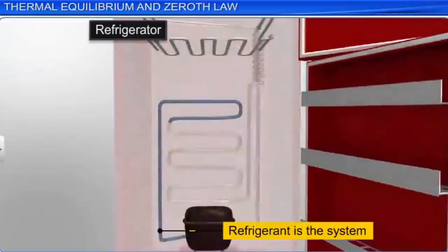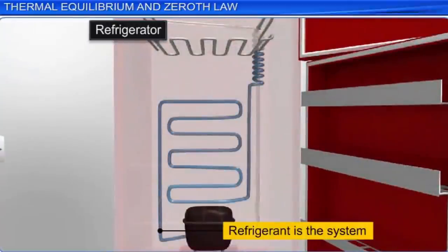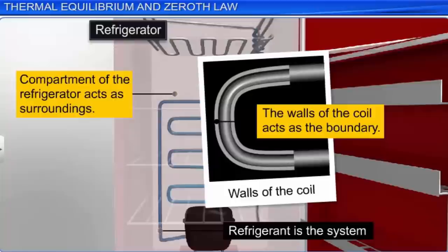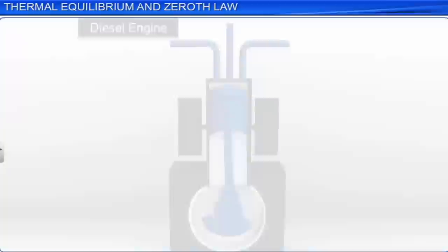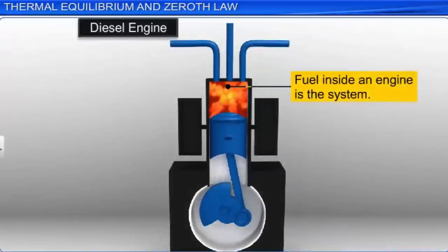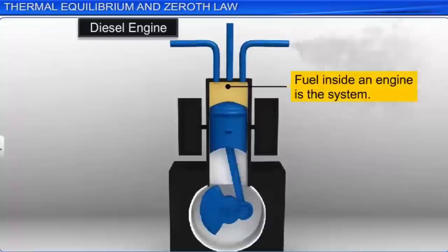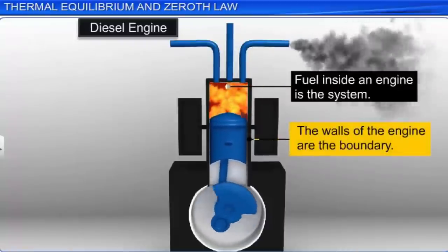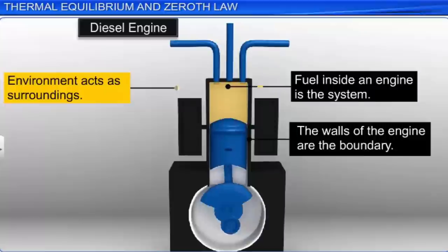The refrigerant is the system in a refrigerator; the walls of the coil act as the boundary, and the compartment of the refrigerator acts as the surroundings. Similarly, the fuel inside an engine is the system, the walls of the engine are the boundary, and the environment acts as the surroundings.